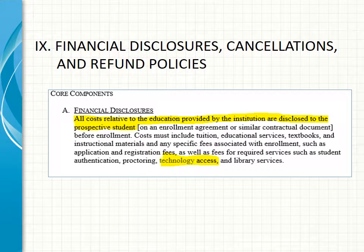The final section where technology is addressed is Section 9, Financial Disclosures, Cancellations, and Refund Policies. Under core component Section A — Financial Disclosures — technology is addressed from the standpoint that the cost of all technology access, among many other costs the student would incur during the course of their education, must be disclosed to all prospective students.